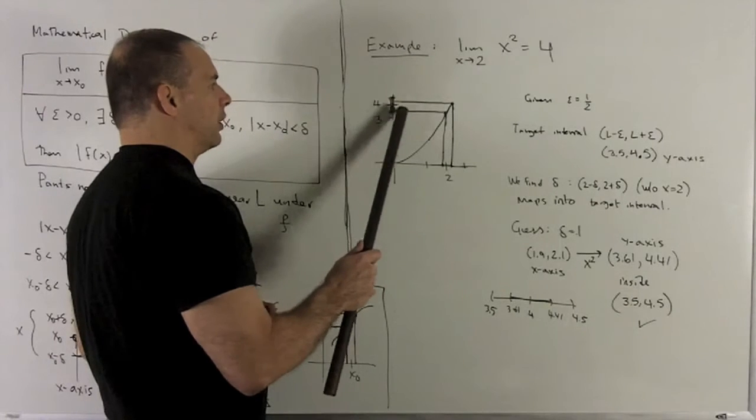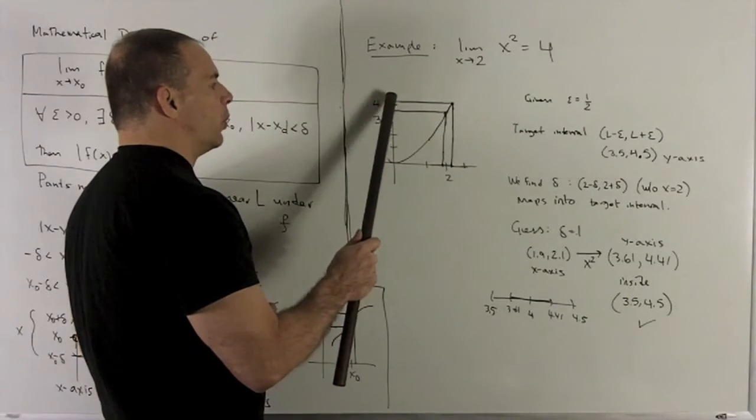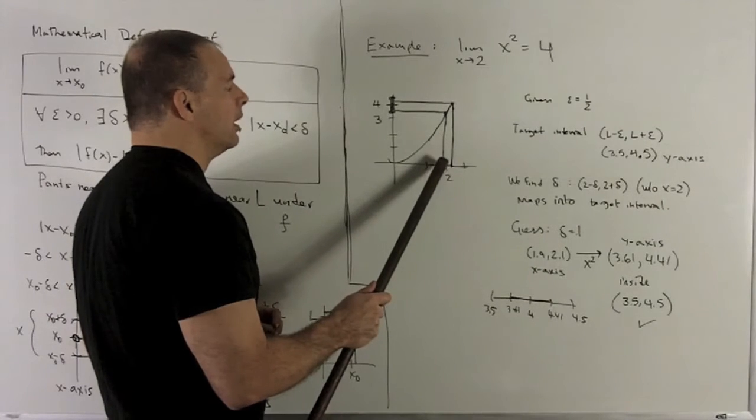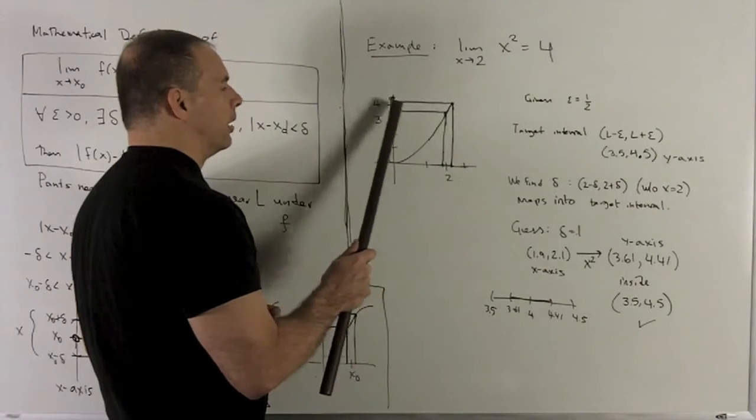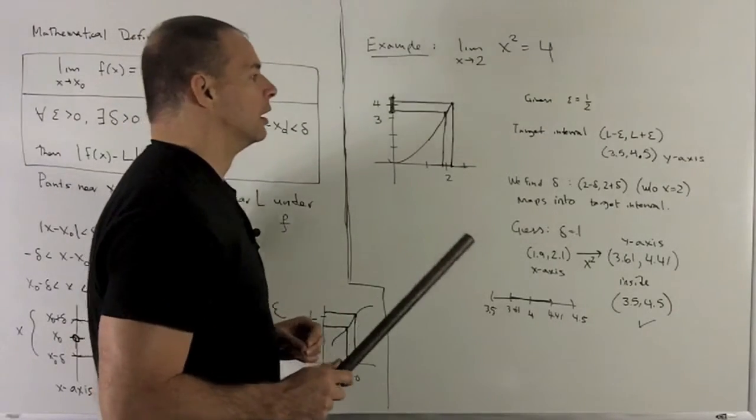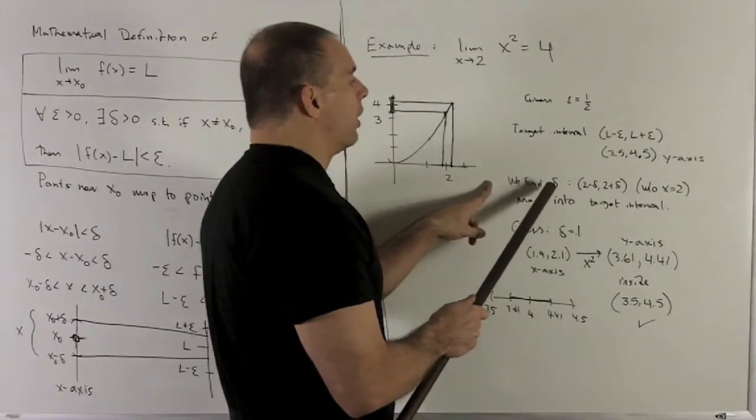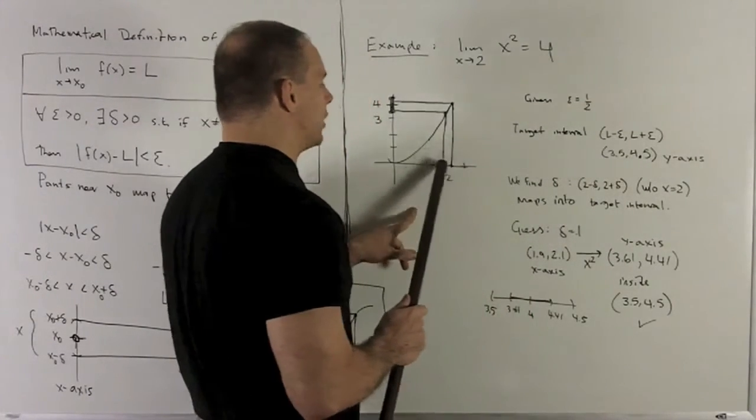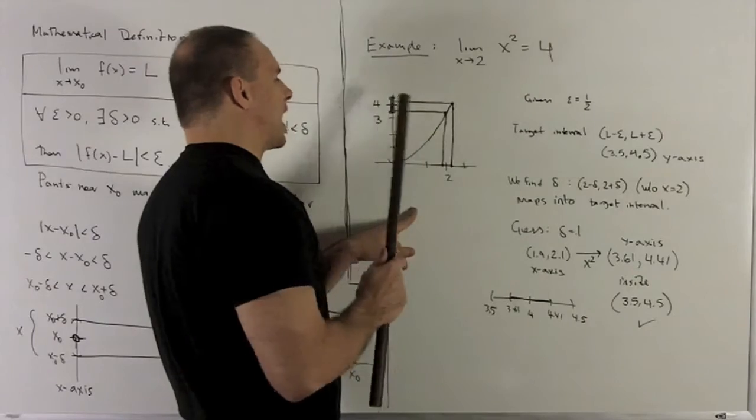That's going to be this thing here that I've blacked in. So we want to get an epsilon, so if I take a small enough neighborhood of 2, it winds up pushing up and over into my target interval under f, which is x squared. So that's what I'm looking for now. I need to find a delta so that if I take the small interval around 2, it goes up and inside that interval.